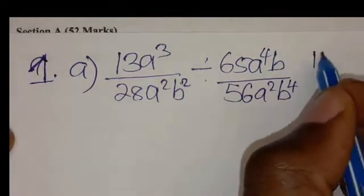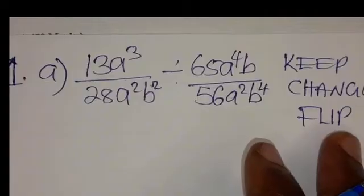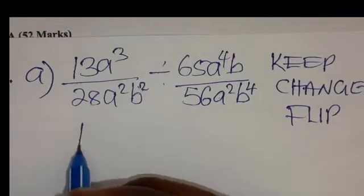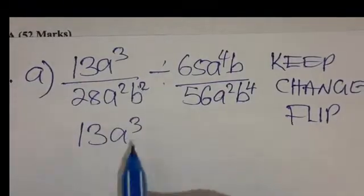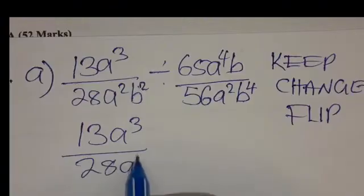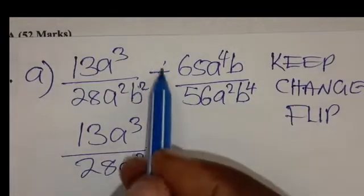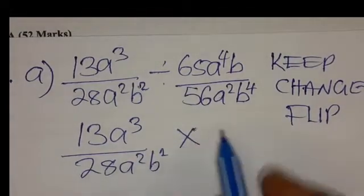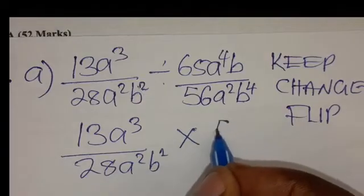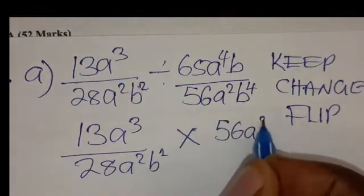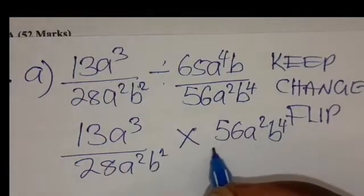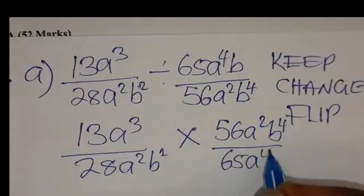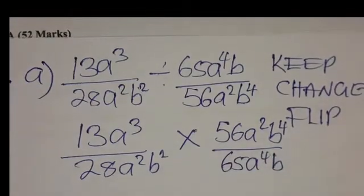The rules are: keep, change, and flip. We are going to keep the first fraction as it is — 13A cubed over 28A squared B squared. Then change the sign to multiplication, and flip: the denominator 56A squared B to the power 4 becomes the numerator, and the numerator 65A to the power 4B becomes the denominator.